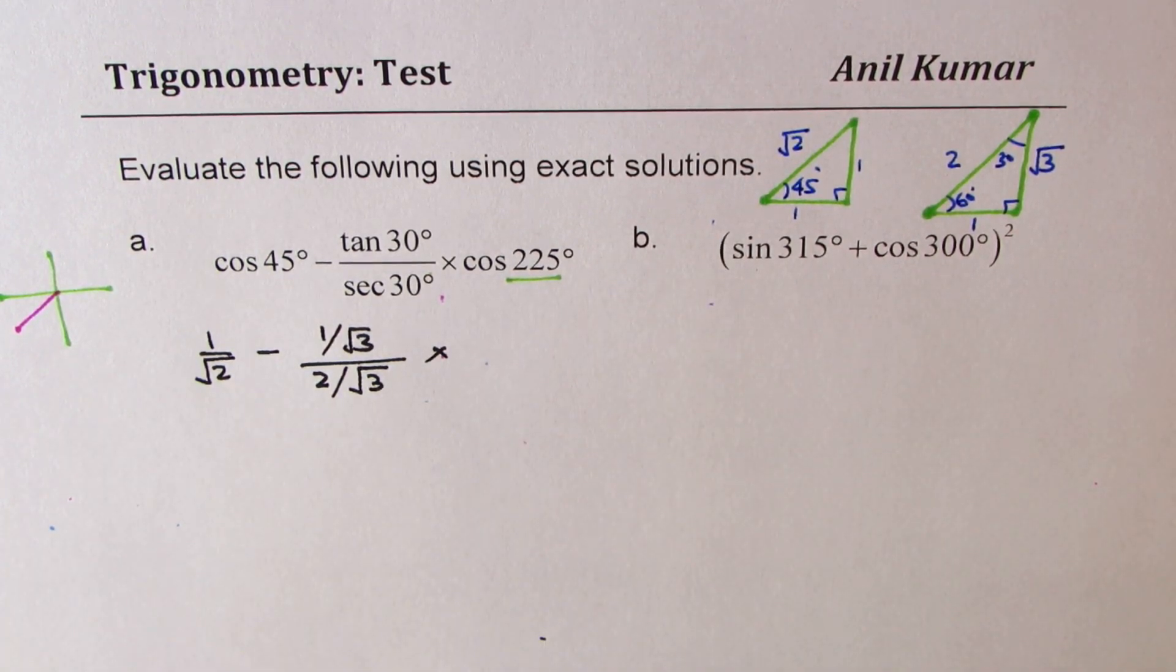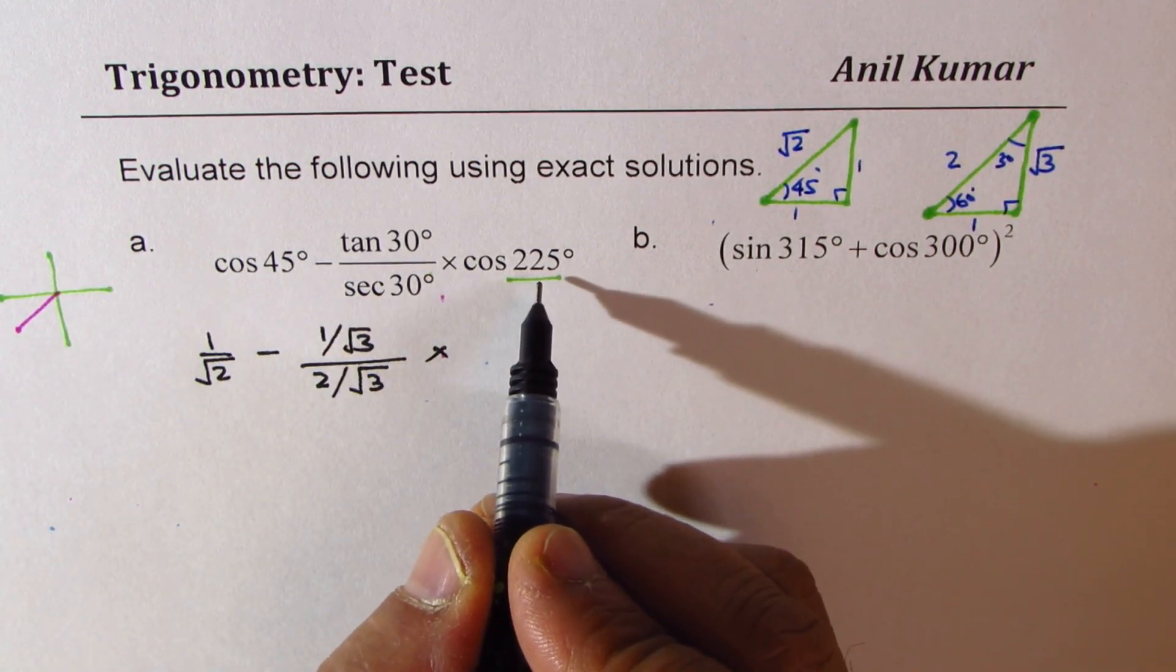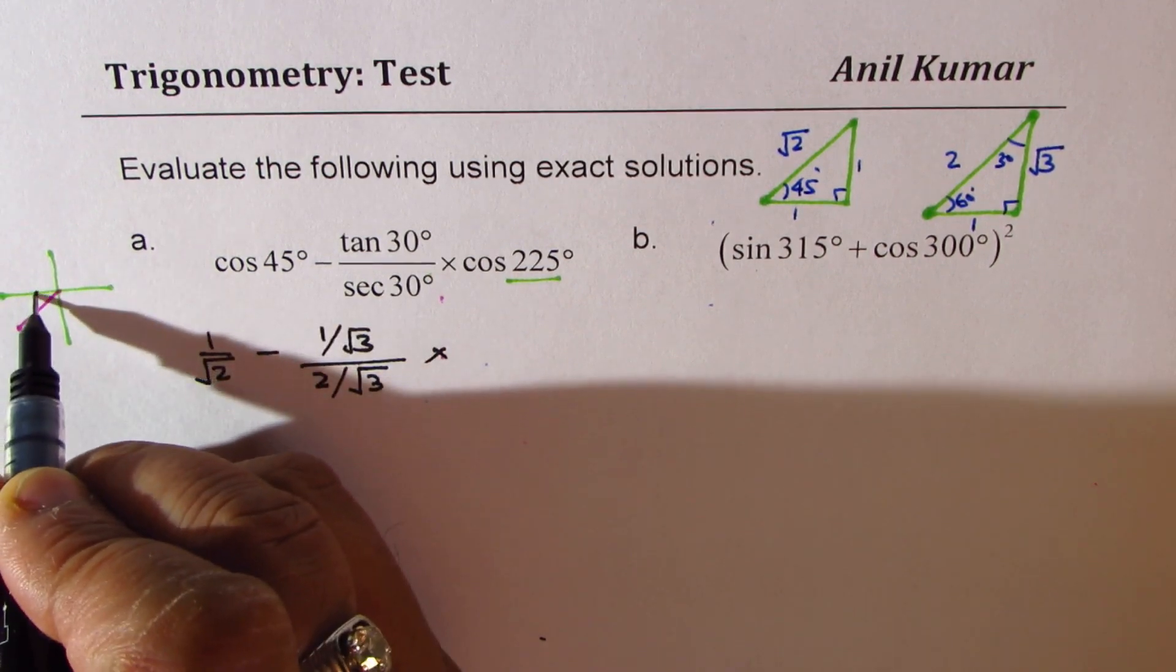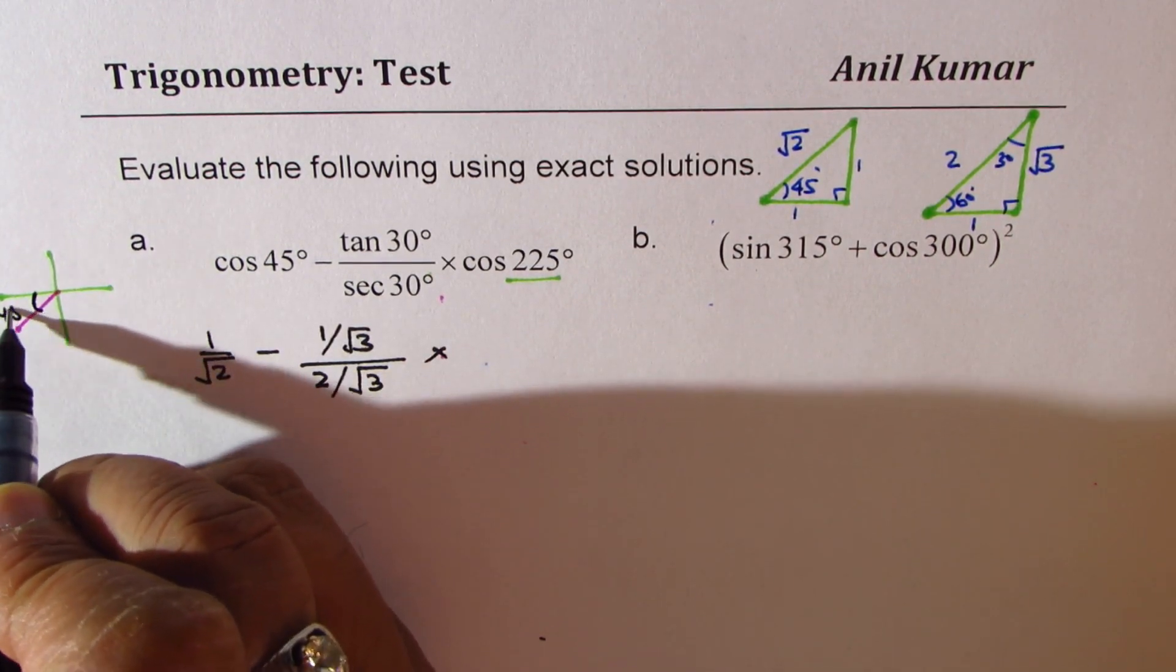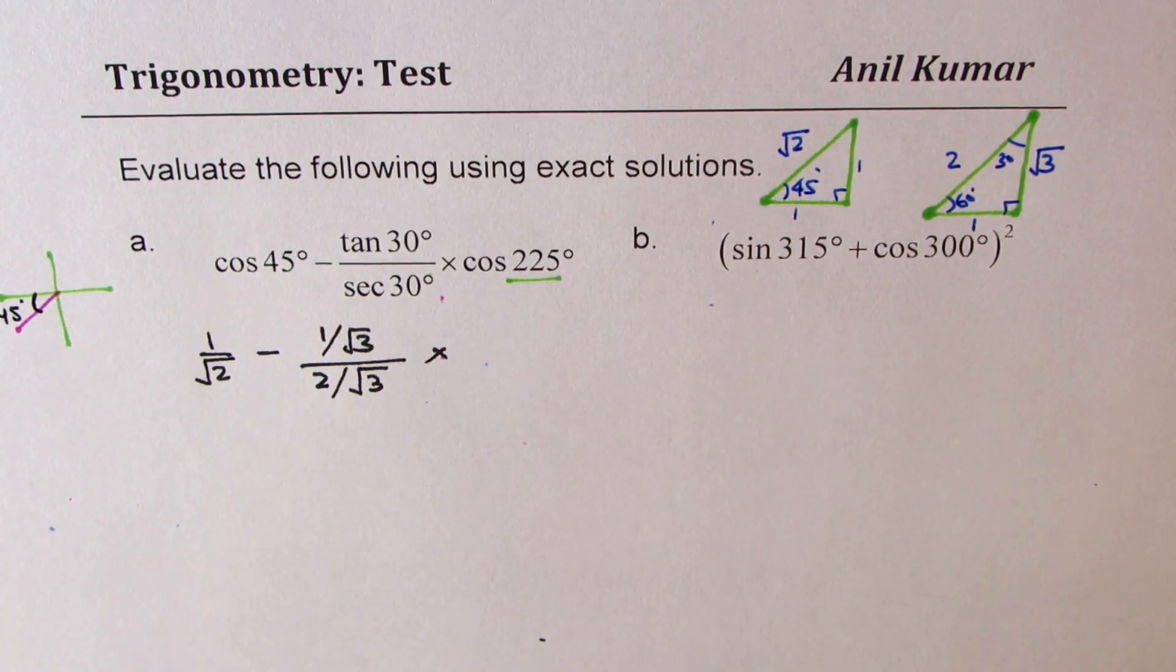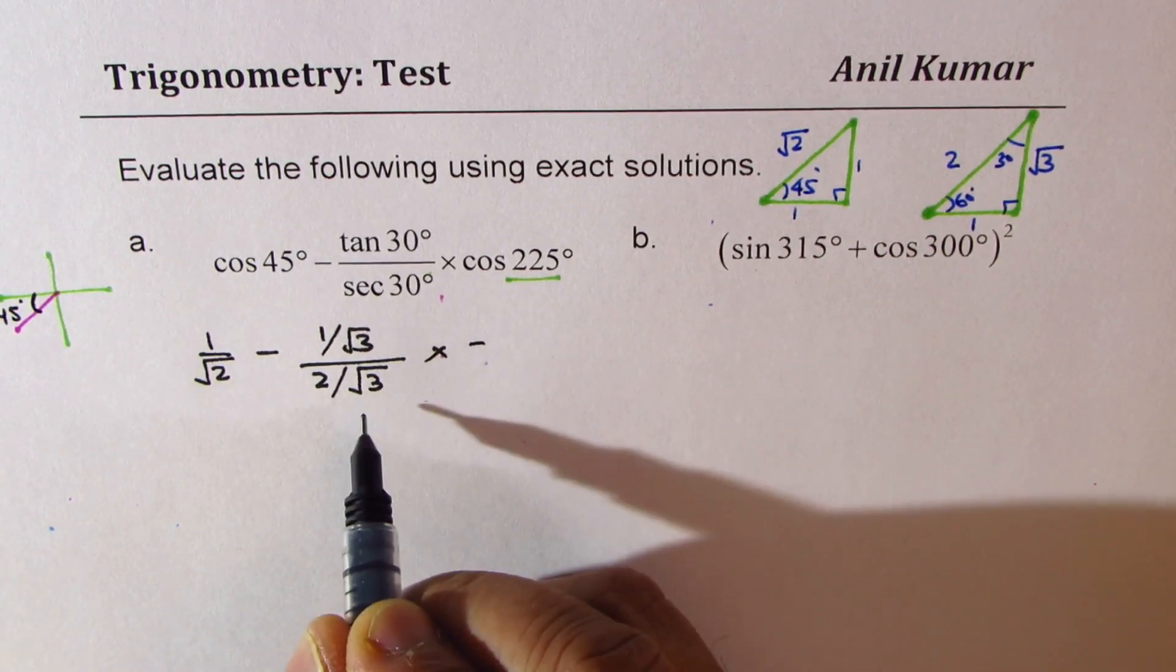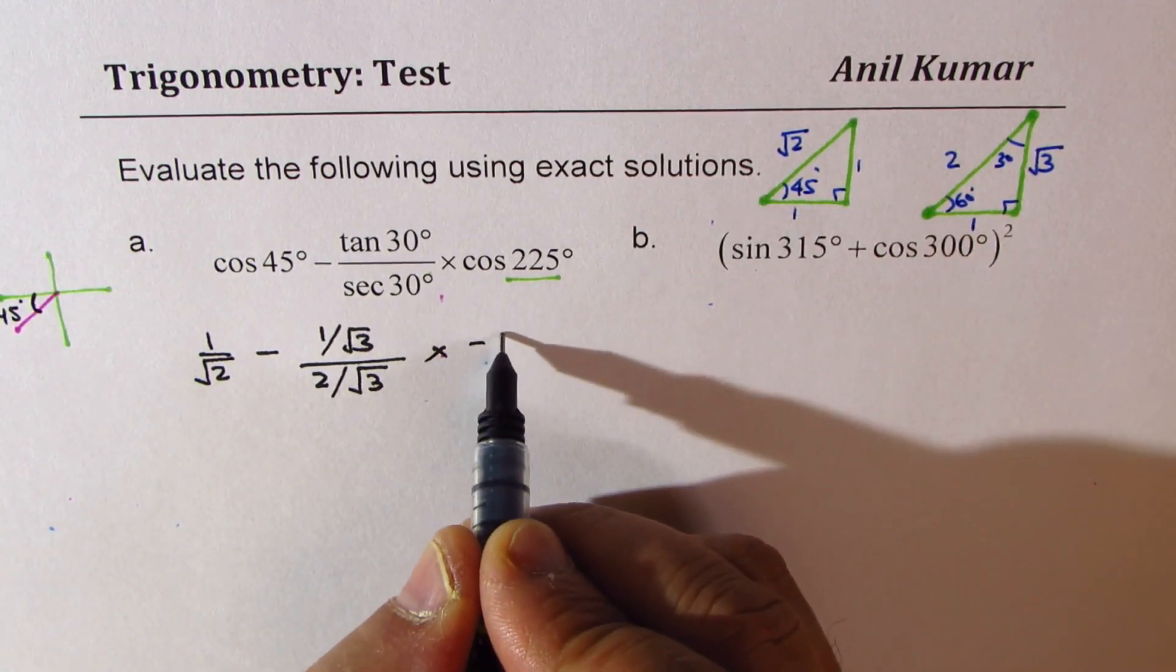So this value is going to be negative and the acute angle is 45 degrees. So it is 225 means the acute angle of 45 degrees, so it is negative of 1 over square root 2.